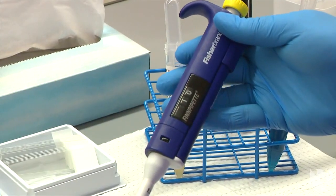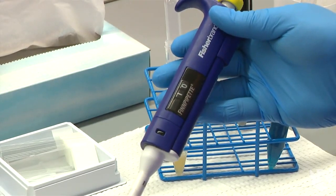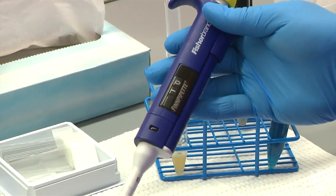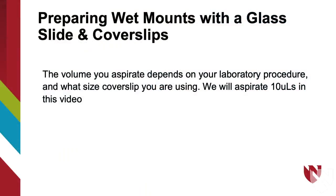Using a micropipette, we are going to aspirate 10 to 15 microliters of our urine sediment sample. The volume you aspirate depends on your laboratory procedure and what size cover slip you are using. We will aspirate 10 microliters in this video.